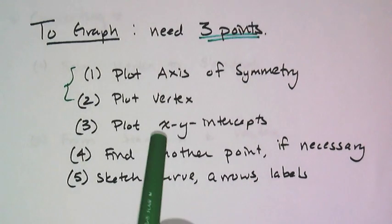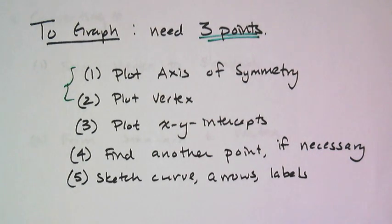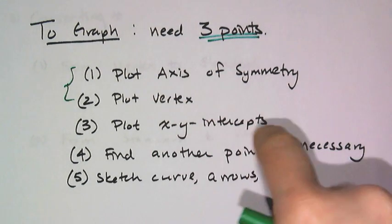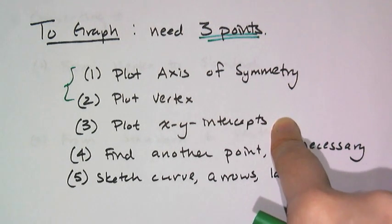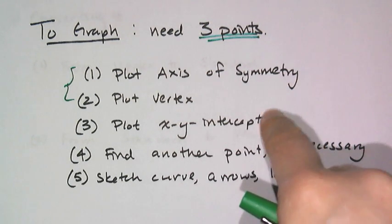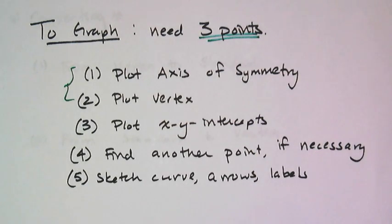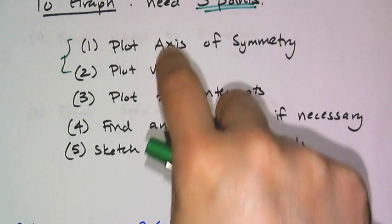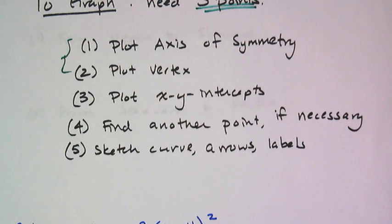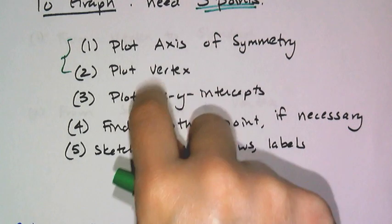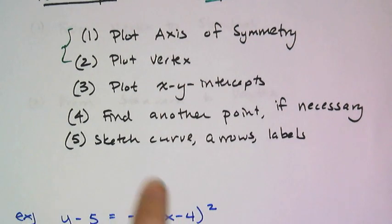Now you do have to plot the x and y intercepts if possible. And this is the thing you have to calculate. If you have standard form, it just gives you the y intercept. Vertex form doesn't give you that, so you have to do a little bit of calculation. Remember, if these three things don't give you three points, you might have to find another one or two if these are all the same. And then, of course, you want to sketch the curve, add any arrows and labels.